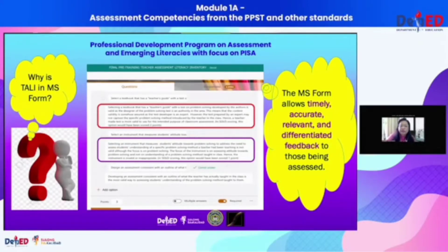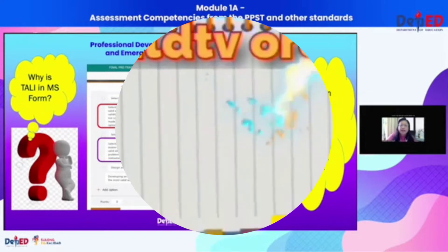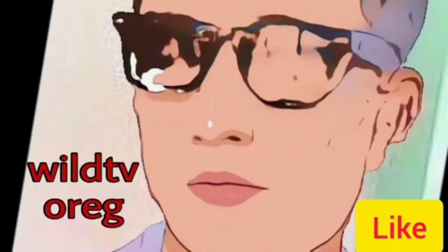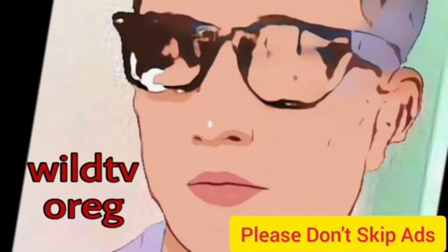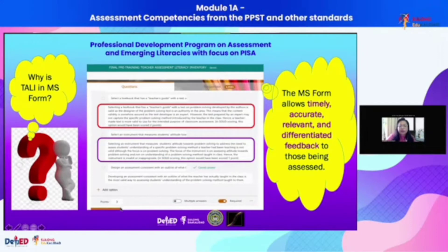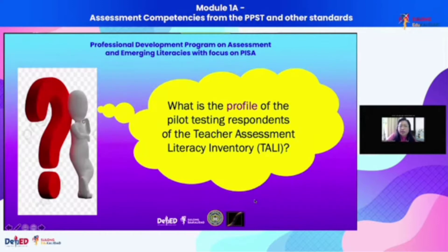For your students to correct whatever misconceptions they have when choosing answers, you can change the points — here I put three points, but that could be changed to five points. It could also allow multiple answers, so a set of choices could have two or more responses that are acceptable. Google Forms also does that, but there are features in MS Forms that we like that cannot be seen in Google Forms.